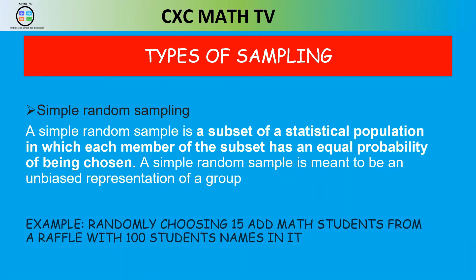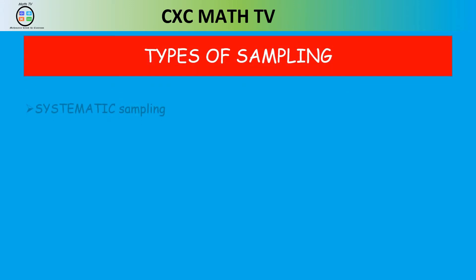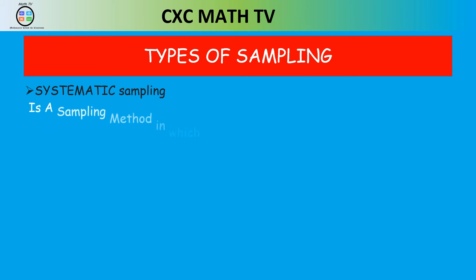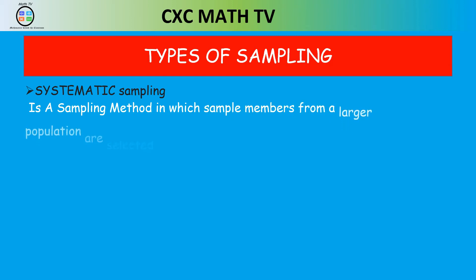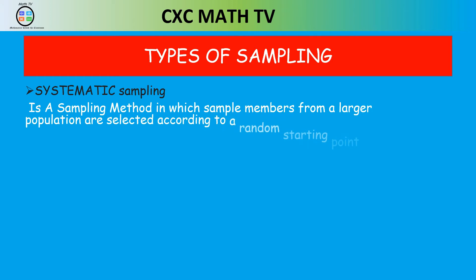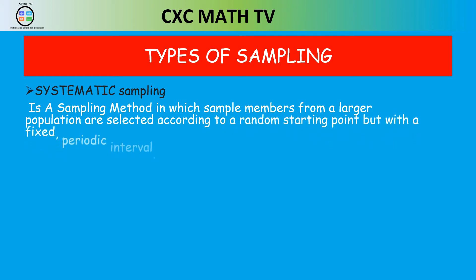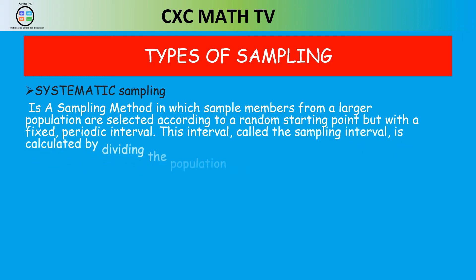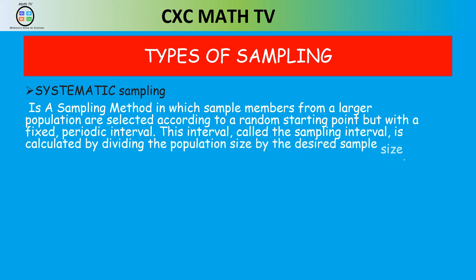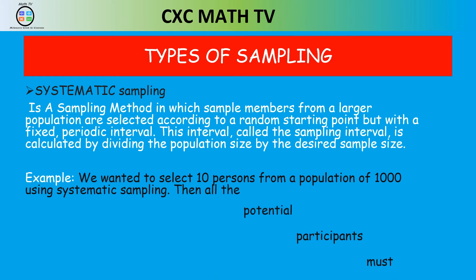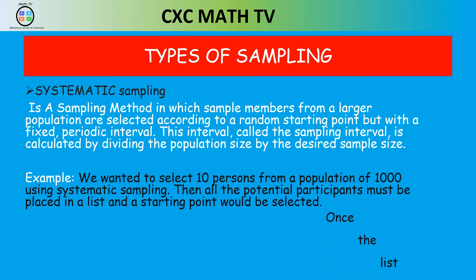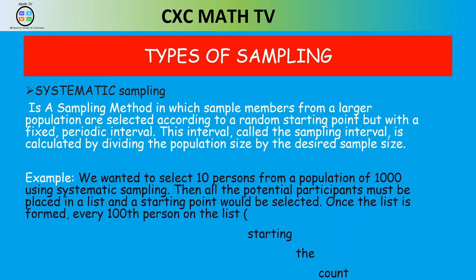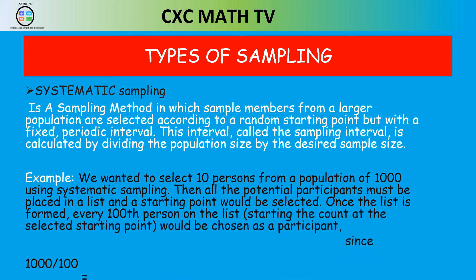Next is systematic sampling. When you hear the word systematic, what should come to mind is organized — a structure. Systematic sampling is a method in which sample members from a larger population are selected according to a random starting point but with a fixed and periodic interval, called the sampling interval, calculated by dividing the population size by the desired sample size. For example, to select 10 persons from a population of 1,000, every 100th person on the list would be selected.